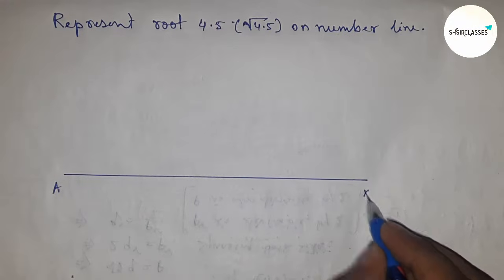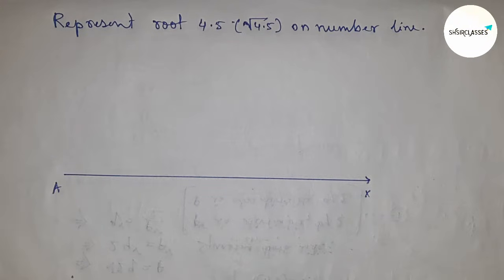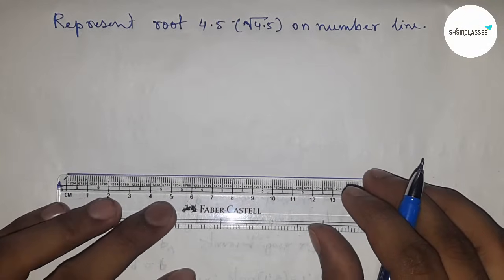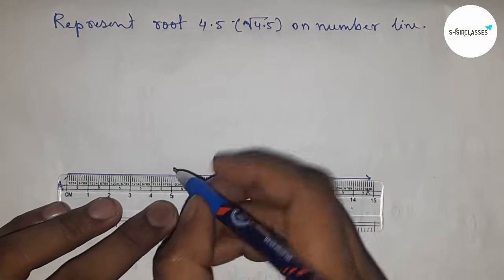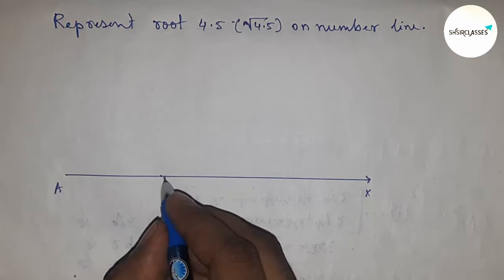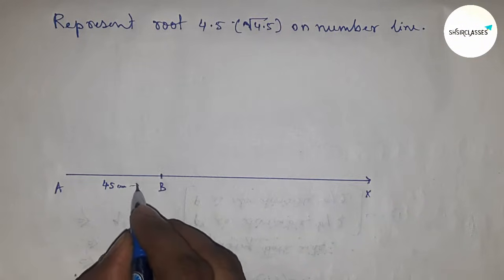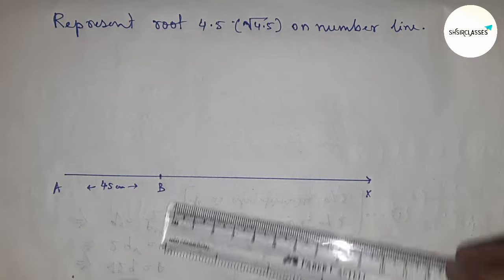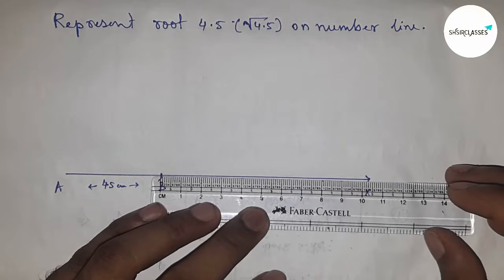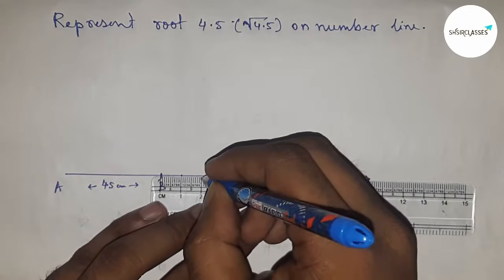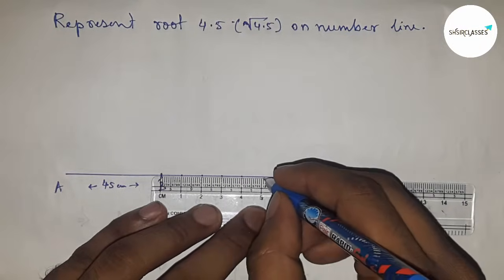First of all, draw a line of any length here, and the line is AX. Next, take a length of 4.5 centimeters by scale and this is point B. So AB equals 4.5 centimeters.